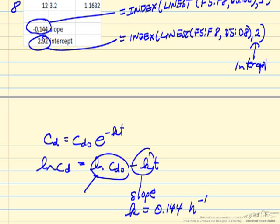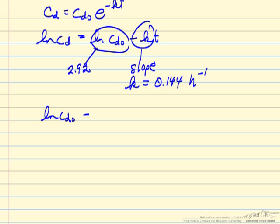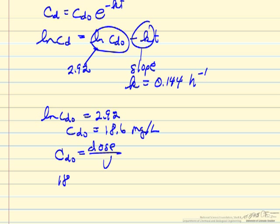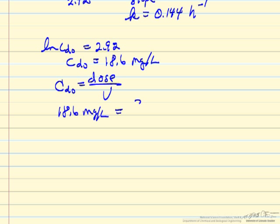This is the intercept. So this is 2.92. If the log of the initial drug concentration is 2.92, then this initial drug concentration is 18.6 milligrams per liter. This initial concentration would be equal to how much we injected divided by the volume. So 18.6 milligrams per liter, that's the concentration initially we calculate. We injected 300 milligrams. So this means we can solve for the volume: 16.1 liters, or probably realistically 16 liters.